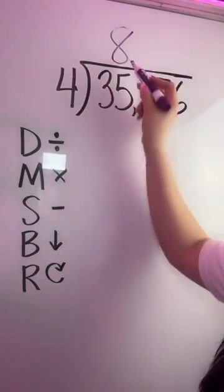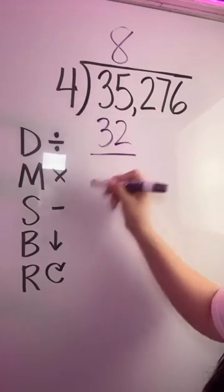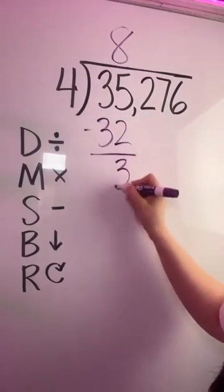Next, we're going to multiply. Eight times four is 32. Next, we're going to subtract. We get a difference of three.